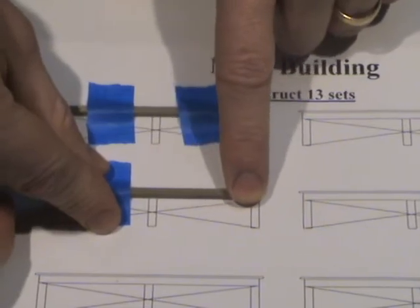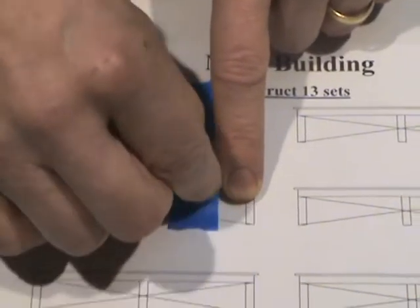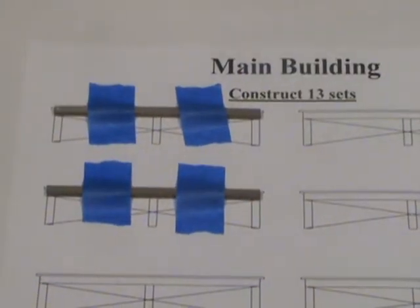It holds it in position and it's not overly sticky, so it comes up easily after the glue is dried. Once you have the beam secured in position, then you're ready for the next step.